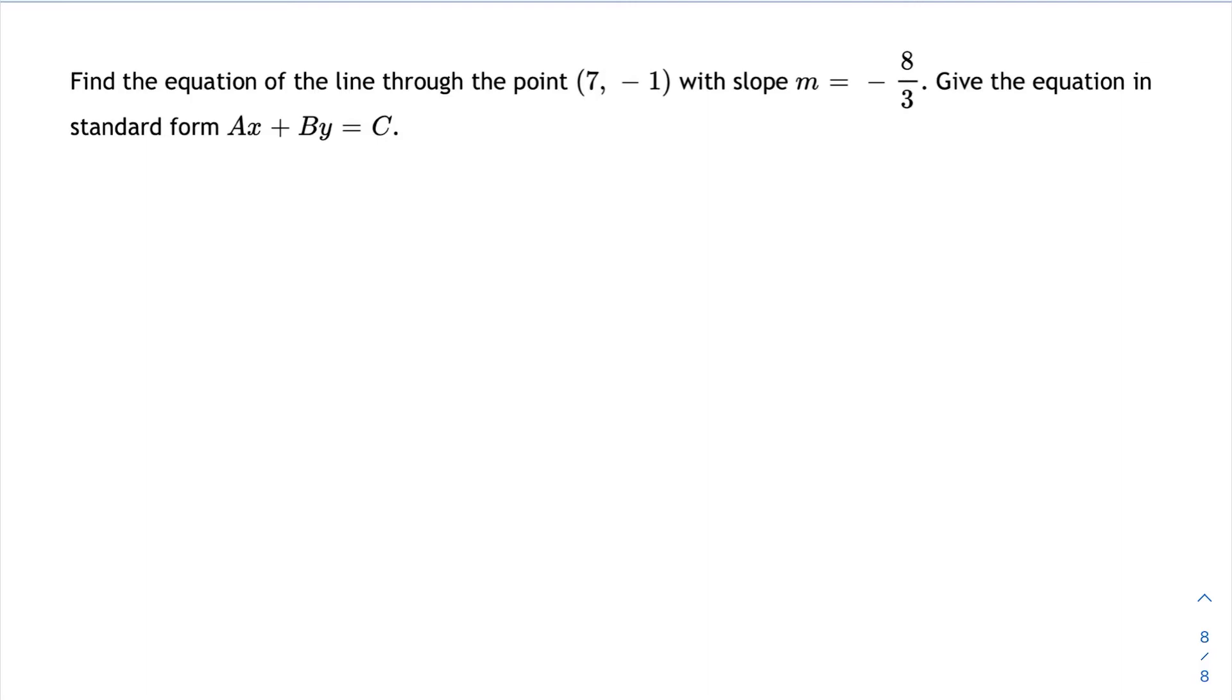Even though it says to give the equation in standard form, I'm actually going to find the equation using point-slope form, which is y minus y1 equals m times x minus x1. In order to use that form, I need a point, which in this case is (7, -1), which I'm going to label x1 y1, and I need a slope m.